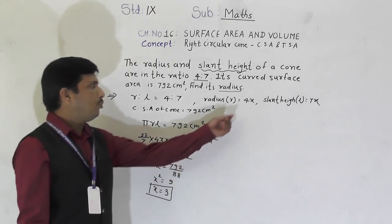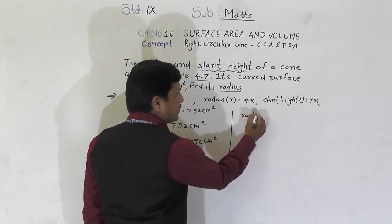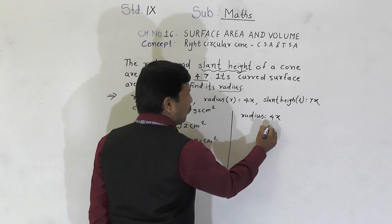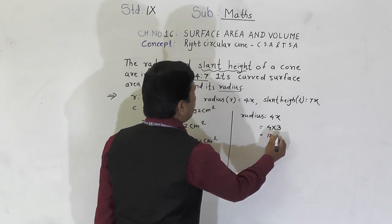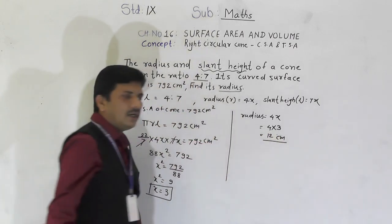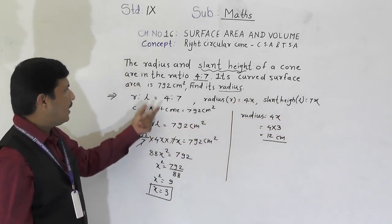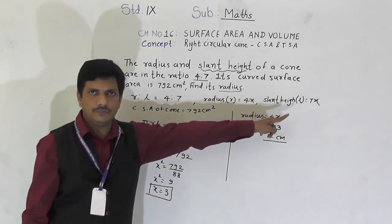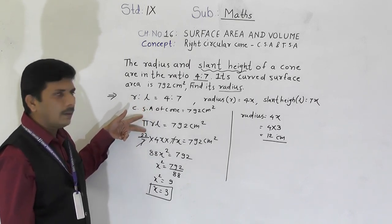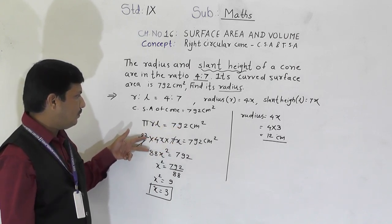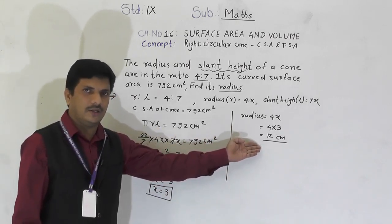With x = 3, the radius r = 4x = 4 × 3 = 12 cm. This was a straightforward example: the ratio was given, so we used variables with the CSA formula πrl, substituted the values, solved for x, and found the actual radius to be 12 cm.